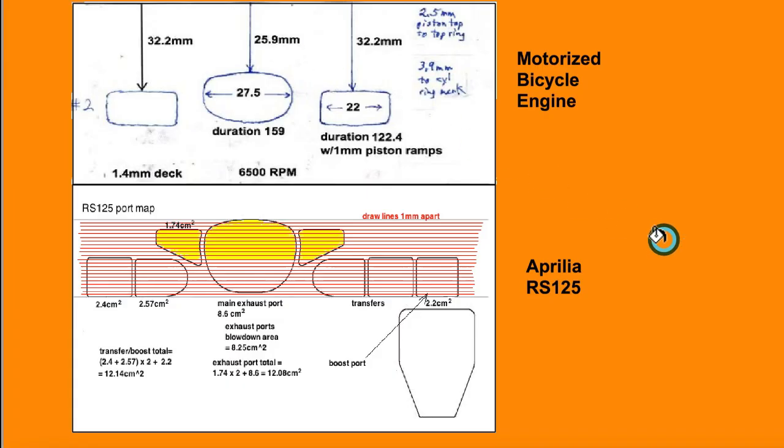So I got a question for you. If this is the port map for your motorized bicycle, excluding the boost port which would be right over here, and you put on a racing cylinder that had this type of arrangement with a lot more generous transfer port area, and you lowered the cylinder so that it maintained the same RPM as your motorized bicycle, which would produce more power?